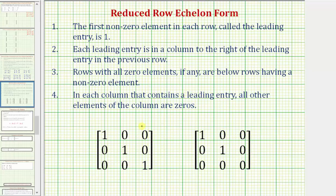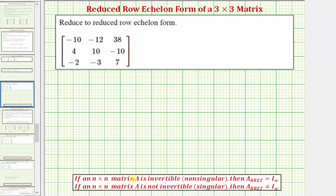Here are two examples of three by three matrices in reduced row echelon form. Notice this three by three matrix is the identity matrix, and this one is not. If an n by n matrix A is invertible, or non-singular, meaning it has an inverse, then matrix A in reduced row echelon form would equal the identity matrix. If it is not invertible, or singular, meaning it does not have an inverse, then matrix A in reduced row echelon form would not equal the identity matrix.